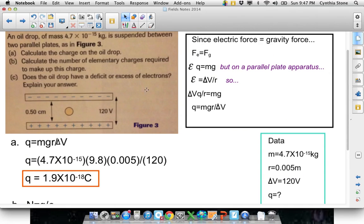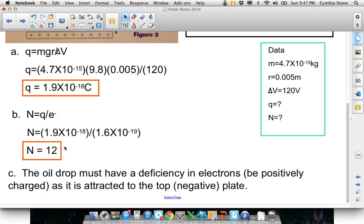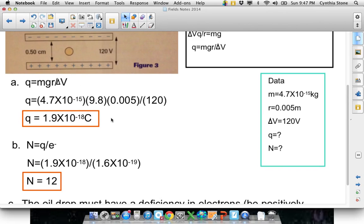Part c says, oh, does it have electrons or protons? It must have a deficiency in electrons as it's attracted to the top plate, right? It must have a positive charge, otherwise it would just drop. It would just drop to the positive plate. Okay? That's another Milliken's example.